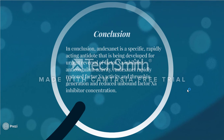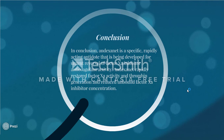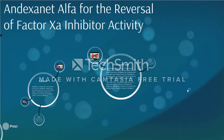In conclusion, dexanet is a specific, rapidly acting antidote that is being developed for urgent reversal of factor Xa inhibitor anticoagulant activity. Dexanet rapidly restores factor Xa activity and thrombin generation, and reduces unbound factor Xa inhibitor concentrations.